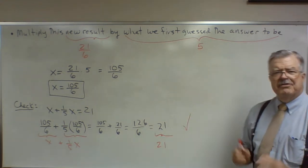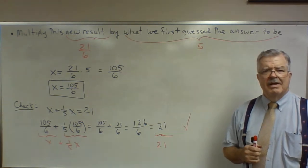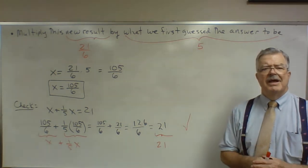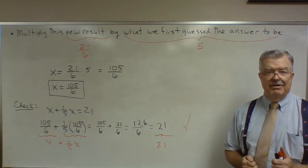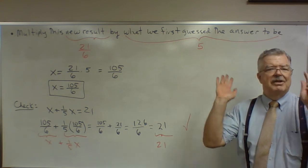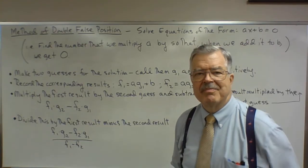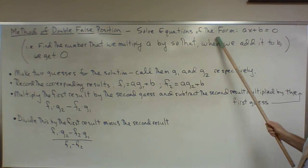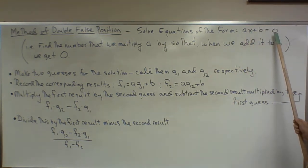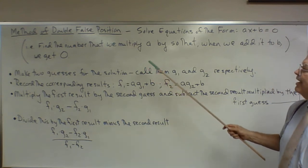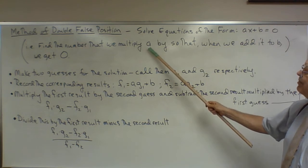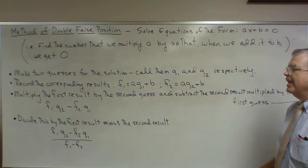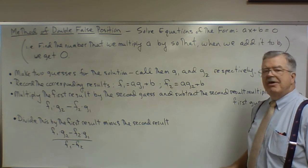Now I have some comments to make about this method, but I'm going to hold off and do an example using the method of double false position, and then I'll come back and really unload. The method of double false position is used to solve equations of the form ax plus b equals zero — find the number that we multiply a by so that when we add it to b, we get zero. Here's the algorithm.